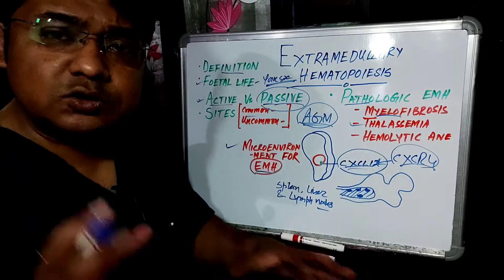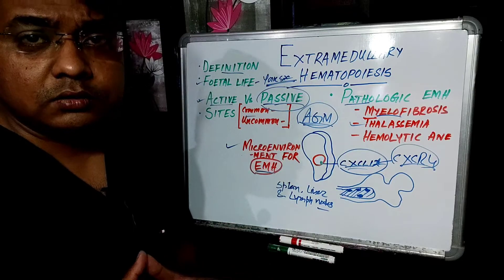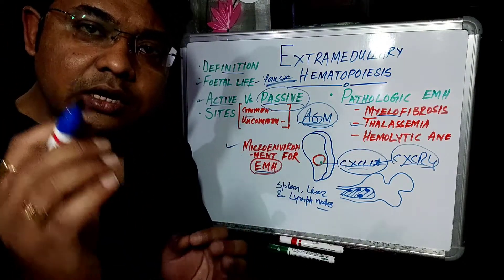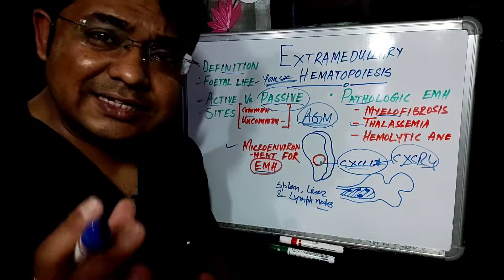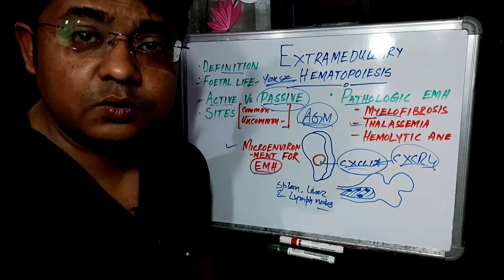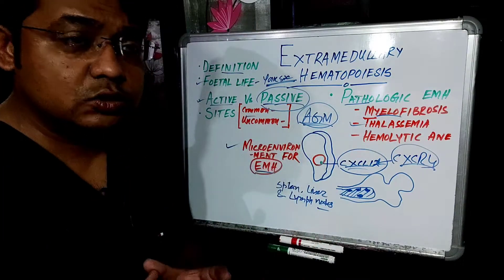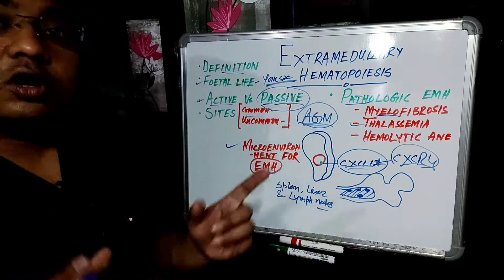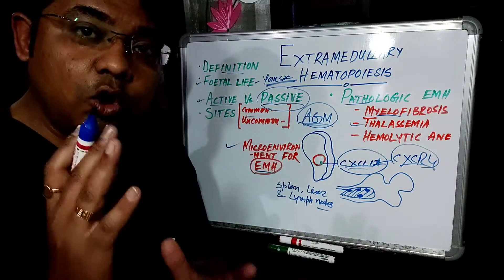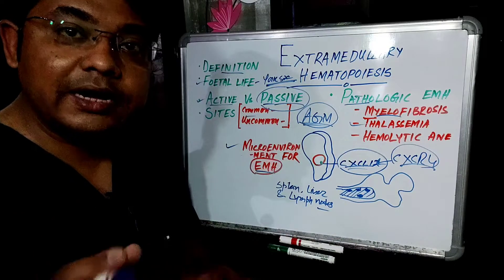In thalassemia, there is decreased production of globin chains in hemoglobin. In precursor RBCs, depletion of one globin chain causes a relative excess of another globin chain, and this unpaired excess globin chain precipitates within those precursor cells, leading to intramedullary destruction of RBC precursors. This results in less RBC and less hemoglobin in circulation, creating a need for RBC production. As a result, the liver and spleen take part in extramedullary hematopoiesis, causing hepatomegaly and splenomegaly in thalassemia.